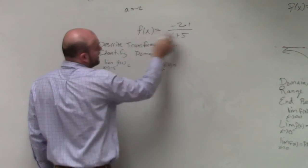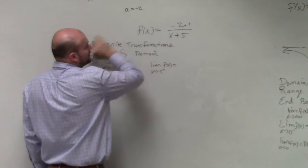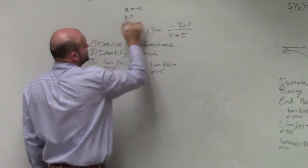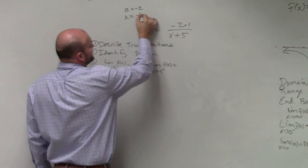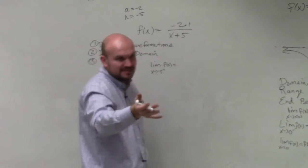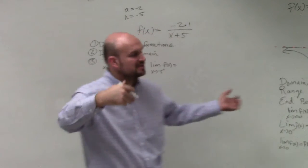So I could say a = -2. And then this value here is going to be h = -5, right? Because it's x minus h. So x minus a negative 5 would be x + 5.